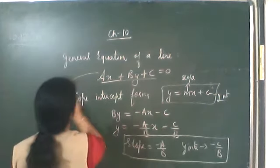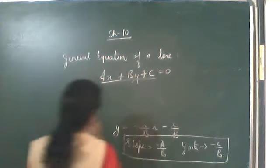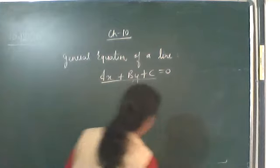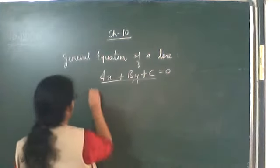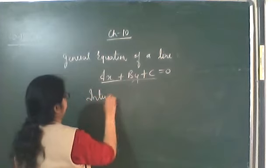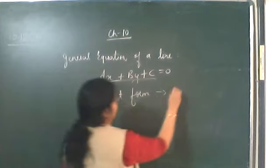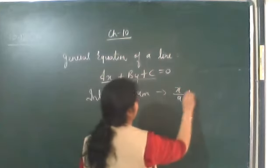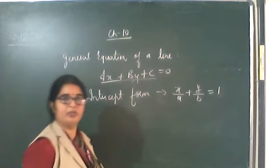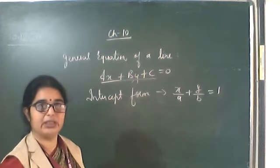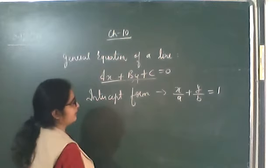Next is converting the same general equation of a line into intercept form. The intercept form is x upon a plus y upon b equals 1. This is the intercept form of the line.